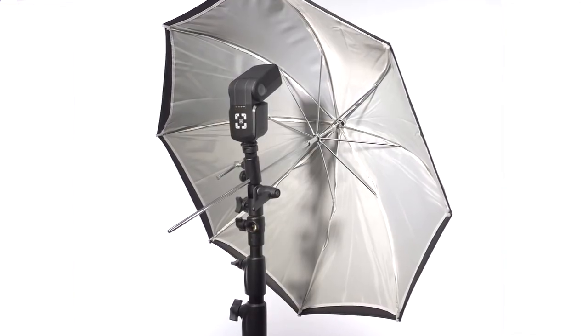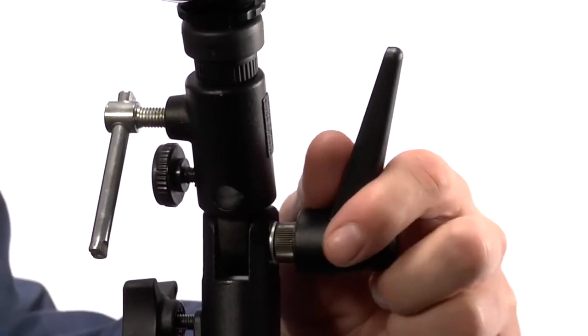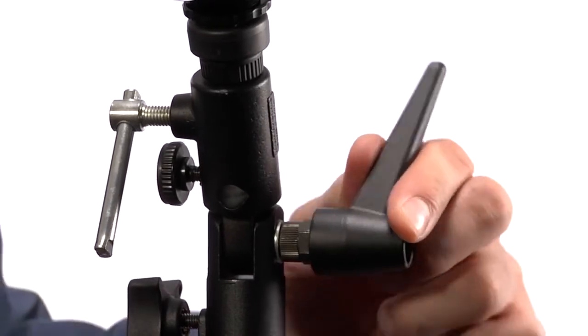You can attach an umbrella to the light tight so that you can modify your lights. A large ratcheted handle allows for quick and smooth operation.